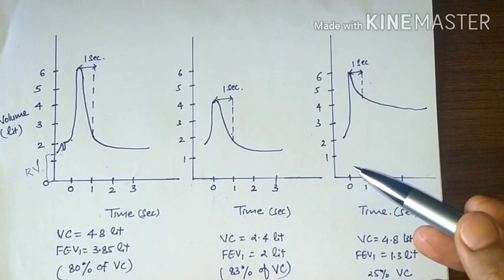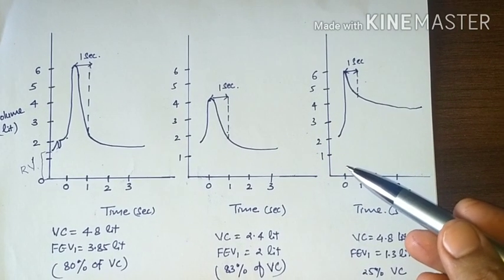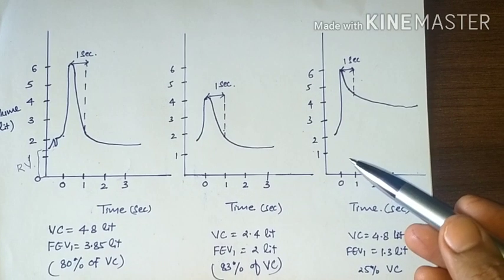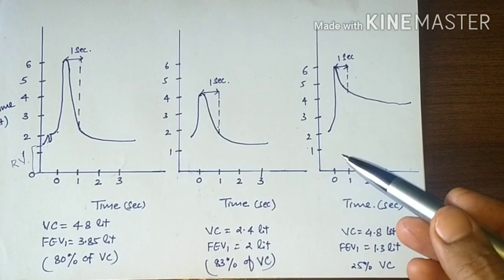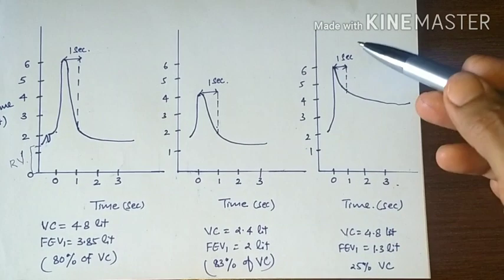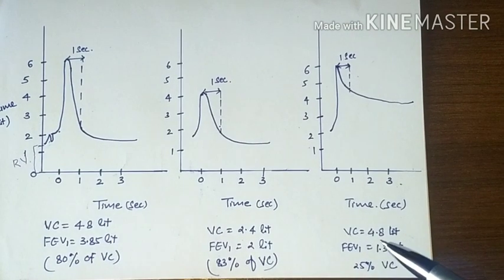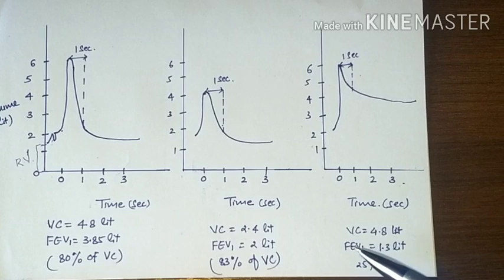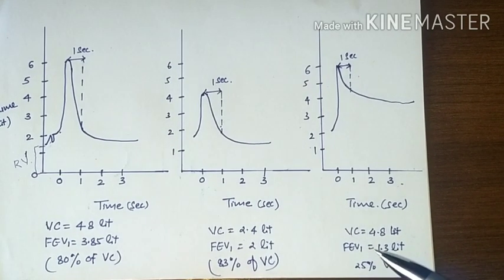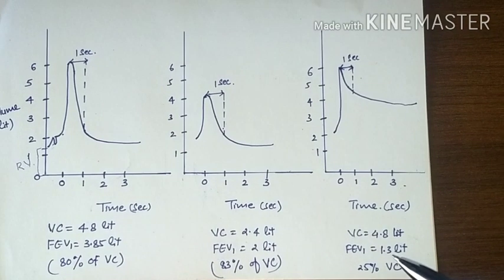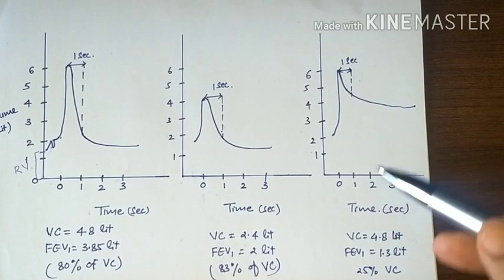Now this shows obstructive lung disease. In obstructive lung disease, like in bronchial asthma, there is obstruction to the air flow. So what happens when air flow is obstructed? FEV1 is reduced. You can see here FVC is 4.8 liters, but FEV1, because of obstruction, 80% of the air is not expired in the first second. So FEV1 decreases in obstructive lung diseases.